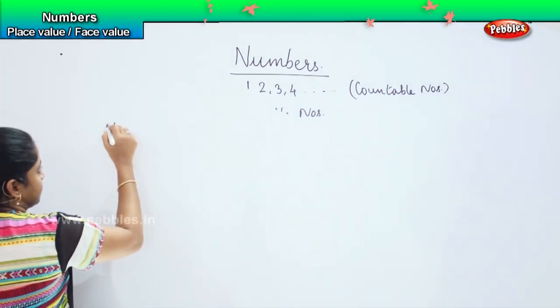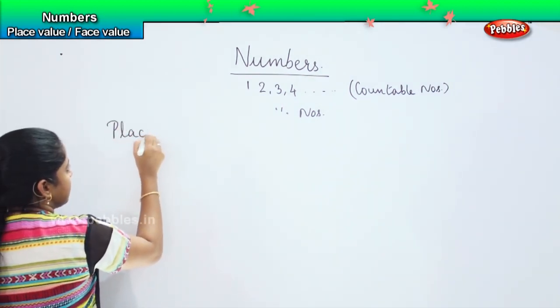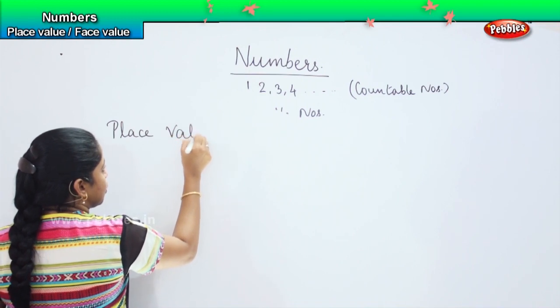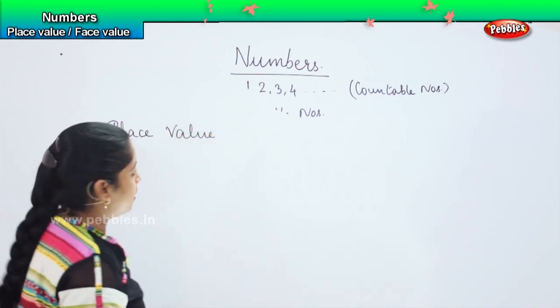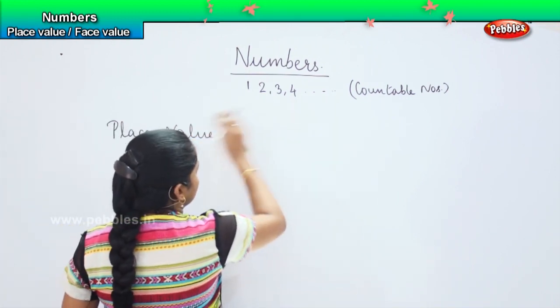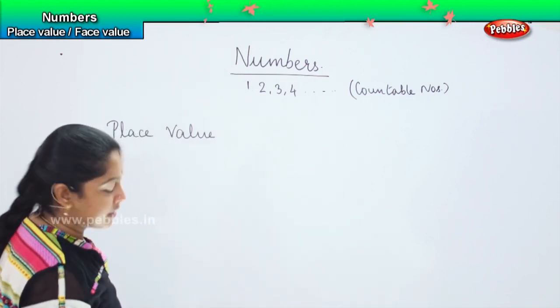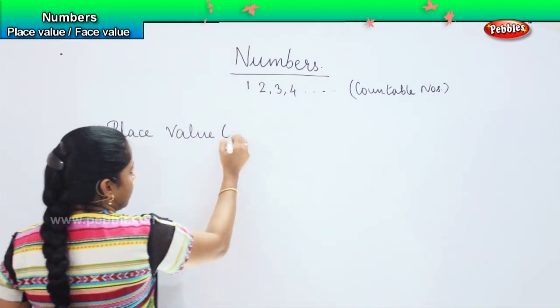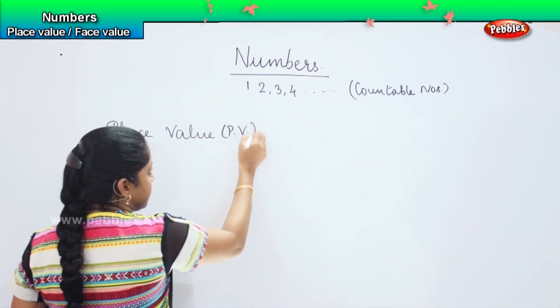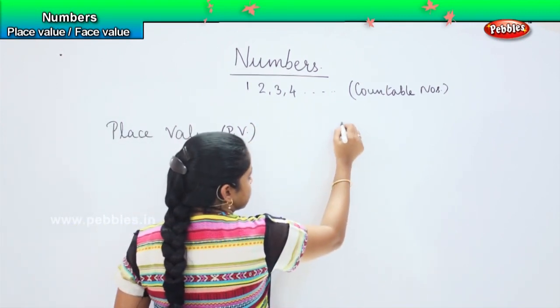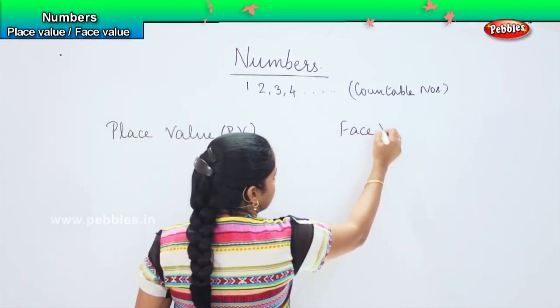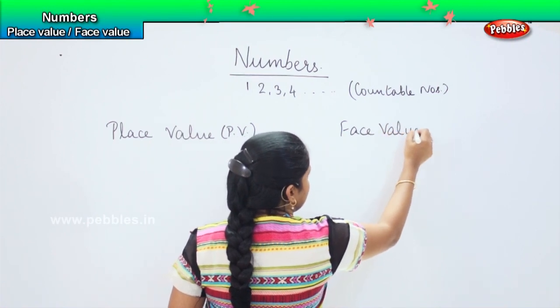Place value. Have you heard this term before? In numbers, we will generally have two concepts. One is called place value, which is nothing but PV, and the other one is called face value, which is nothing but FV.